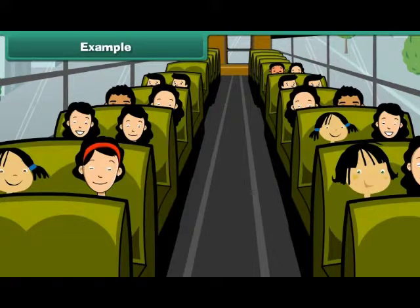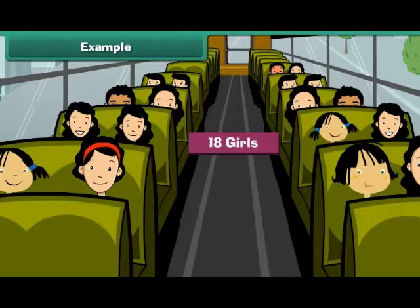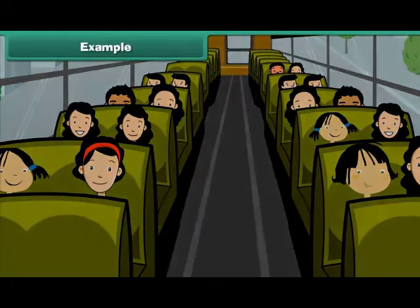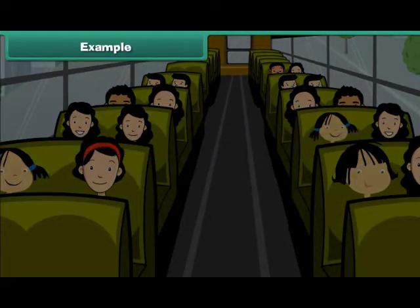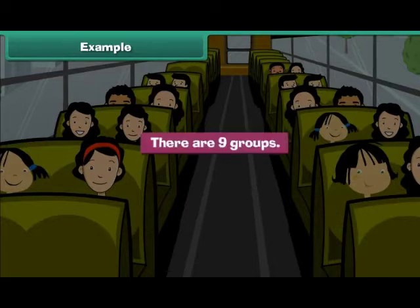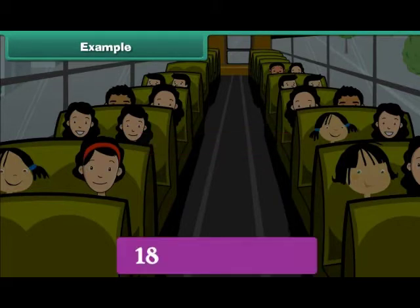Example. 18 girls have to be seated in a bus. Two girls can sit in a single seat. How many seats must be there in the bus? Divide the girls into groups of two. There are nine groups. So, there must be nine seats in the bus. We can write the above problem as 18 divided by 2 is equal to 9.